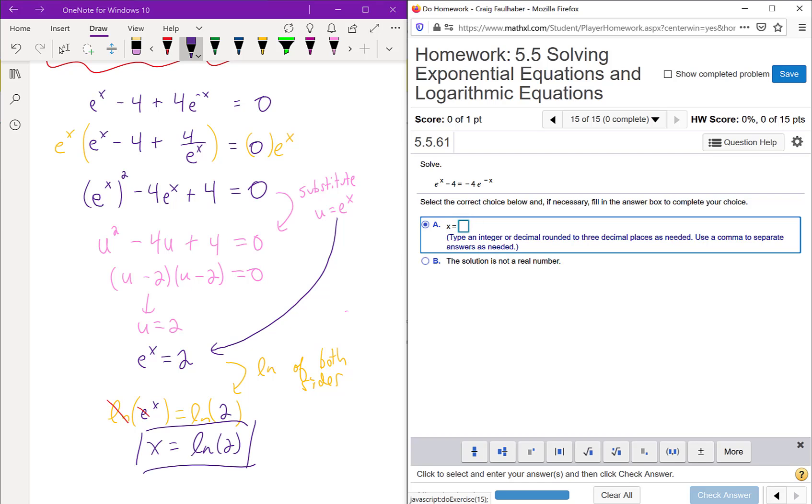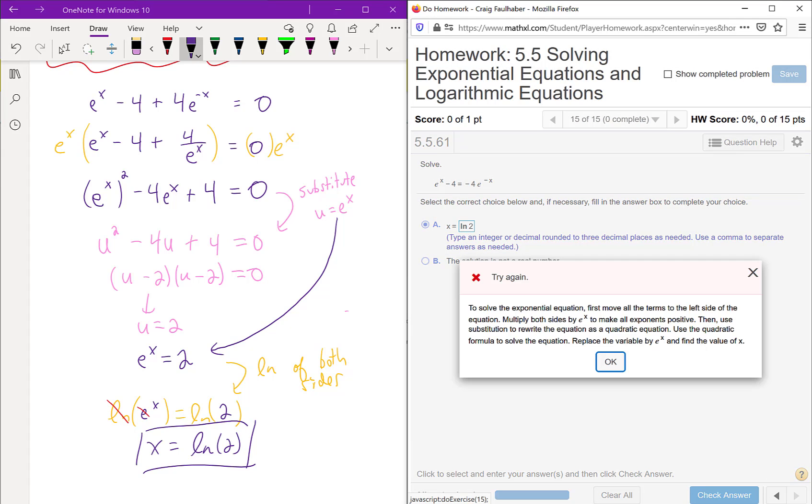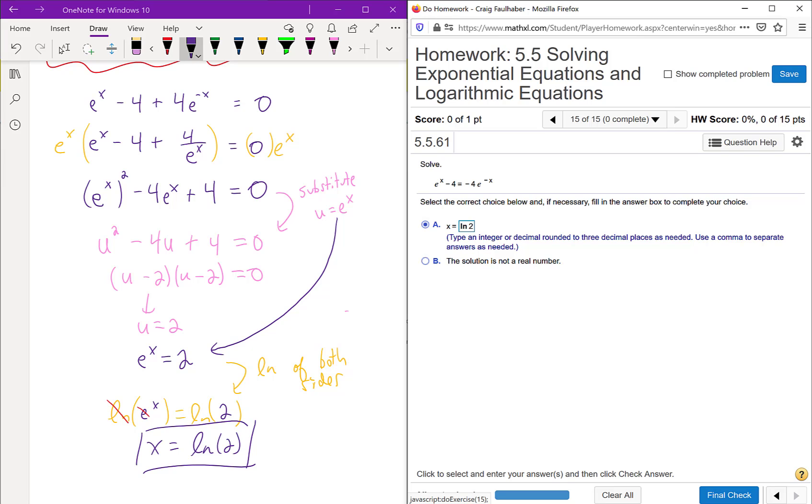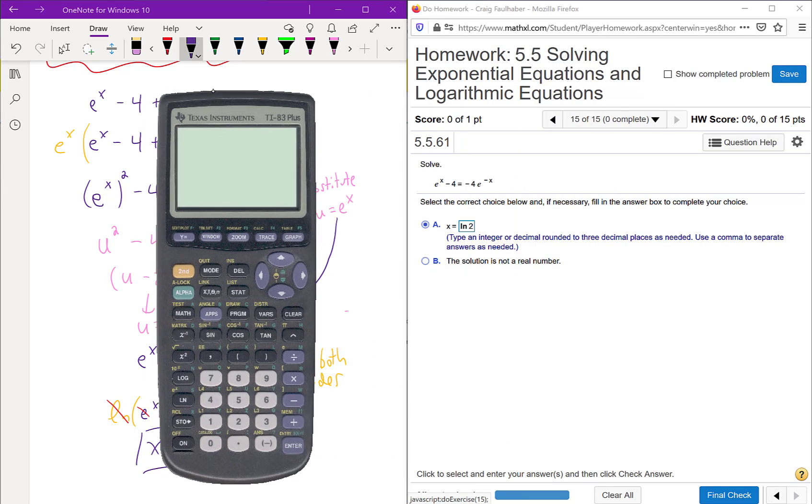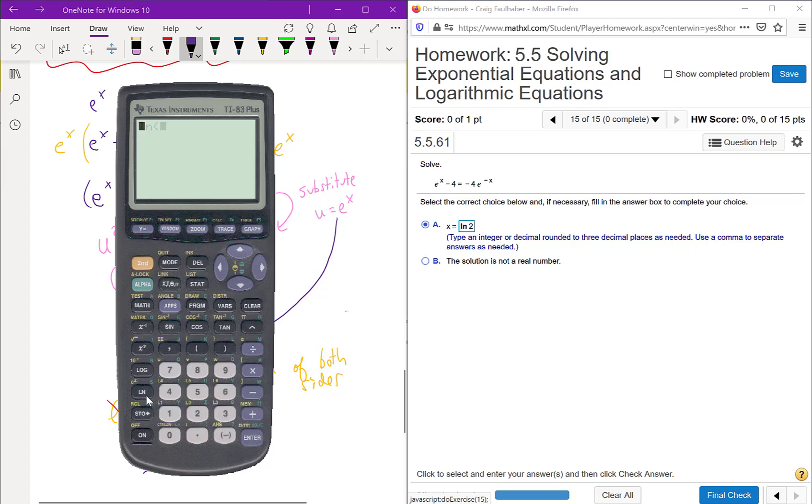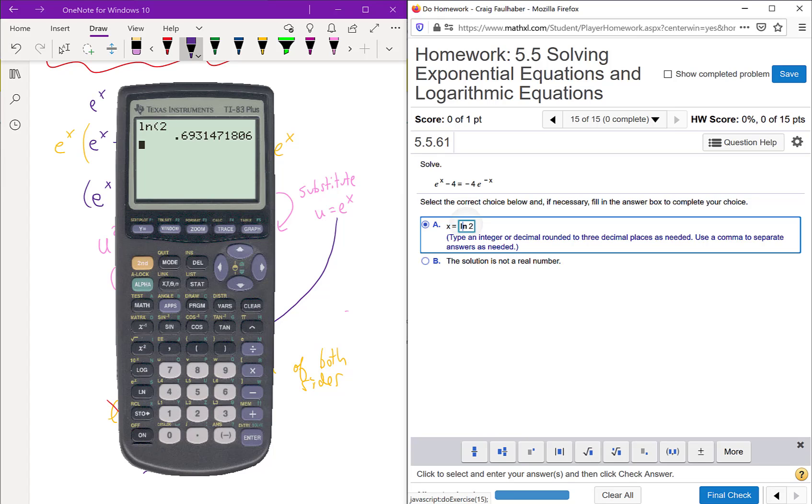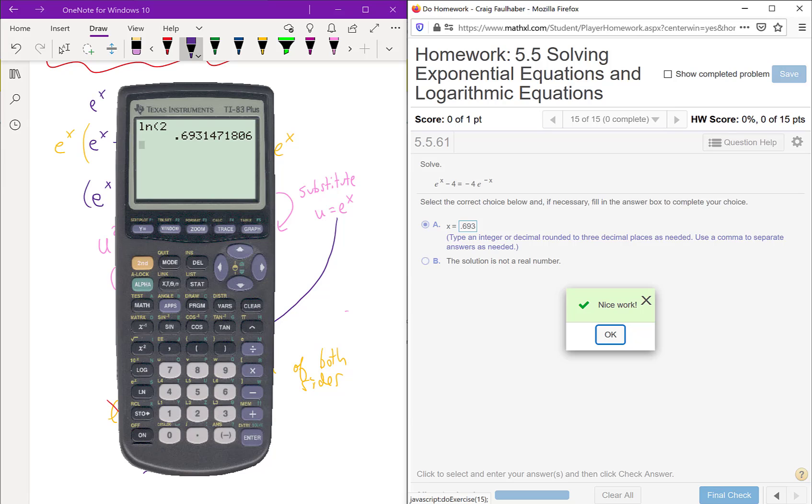Let's plug that in and see what we get. And it looks like what we actually needed to enter was a decimal rounded to three decimal places. So let's do that. I'm just gonna type natural log of two into my calculator. And the answer we're actually looking for is 0.693. That's three decimal places. All right, good job. So that's gonna do it for 5.5. I hope this helps you out.